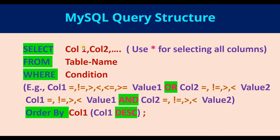In order to sort the rows based on a particular column, we can use the ORDER BY keyword. ORDER BY col1 will sort the rows in ascending order of the values in column 1. If we want descending order, we say ORDER BY the column name followed by DESC. Without specifying anything after the column name, it sorts in ascending order by default.